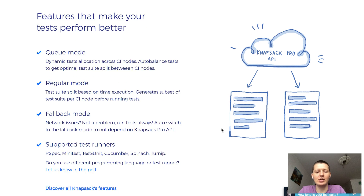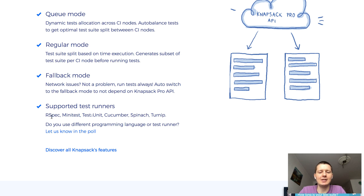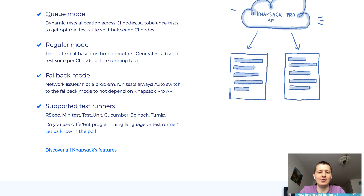As you can see, Knapsack Pro supports multiple test runners like RSpec, Cucumber, MiniTest, and so on. It works with multiple CI providers and can also be executed on your custom CI provider, so that's not a problem.